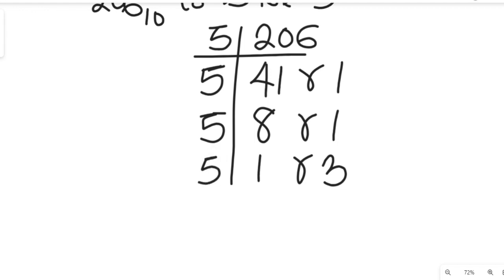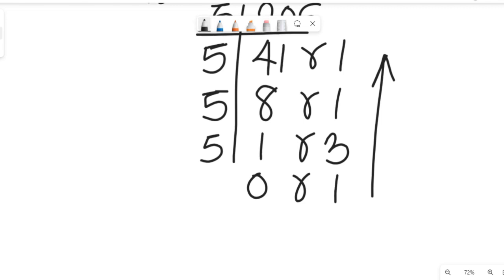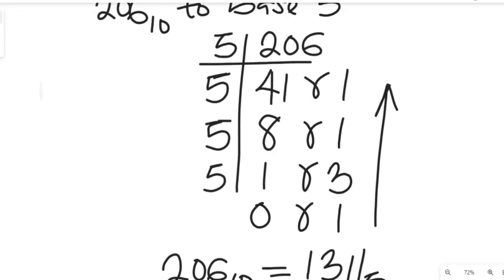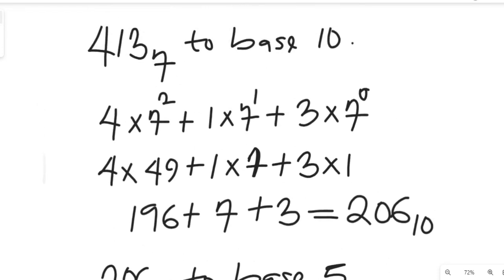Finally, 1 divided by 5 gives us 0, remainder 1. So 206 in base 10 is equal to 1311 in base 5.